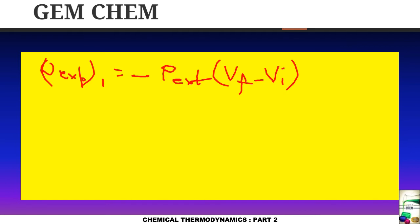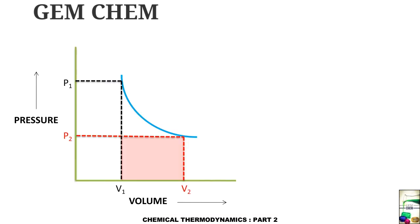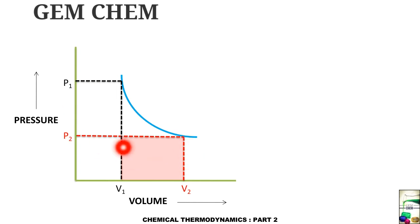On the P versus V plot, P2, V2 is the final state and P1, V1 is the initial state. The area under the curve represents the work lost by the system during expansion.